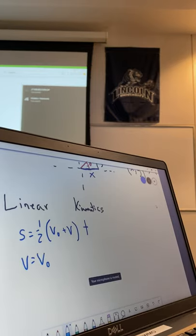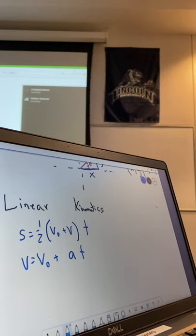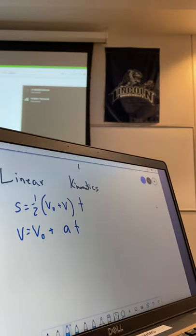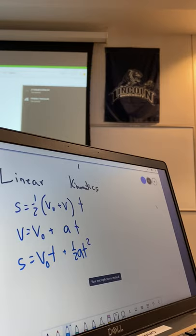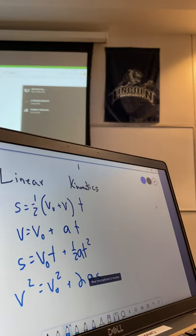Velocity equals initial velocity plus alpha times time, or a times time of acceleration. And we had s equals v naught times time plus one half at squared and v squared equals v naught squared plus 2as. That's velocity and time stretch.